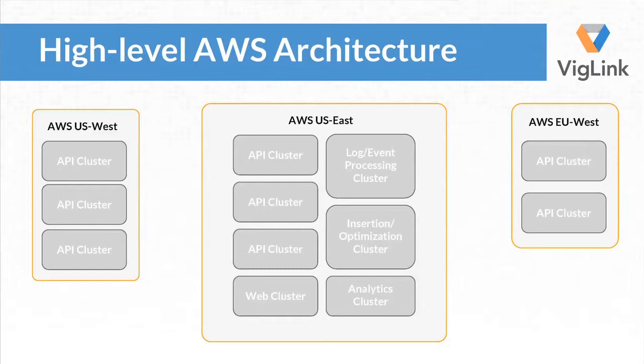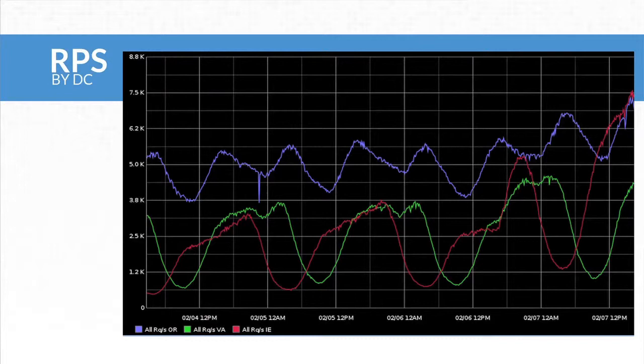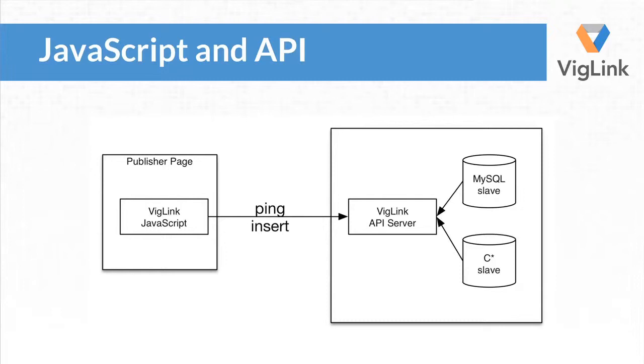At a really high-level architecture, we're all on Amazon — in three Amazon data centers. In Oregon and in Ireland, we just run the API. In Virginia, we run the API as well as all the link insertion technology you'll hear about later, log processing, and viglink.com. In aggregate, I think we're peaking consistently above 10,000 requests per second to the API.